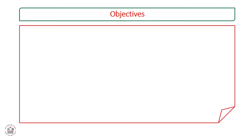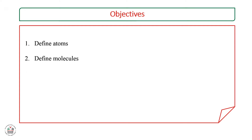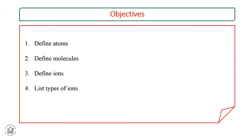Today we have four objectives. We will define atoms, we will define molecules, we will define ions, and finally we will list the types of ions.